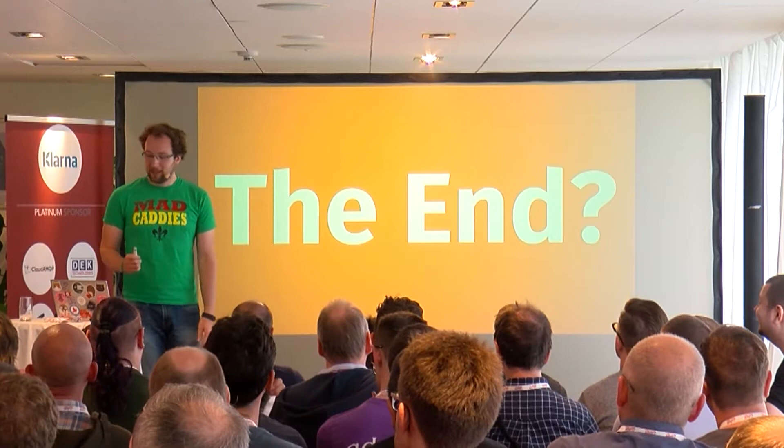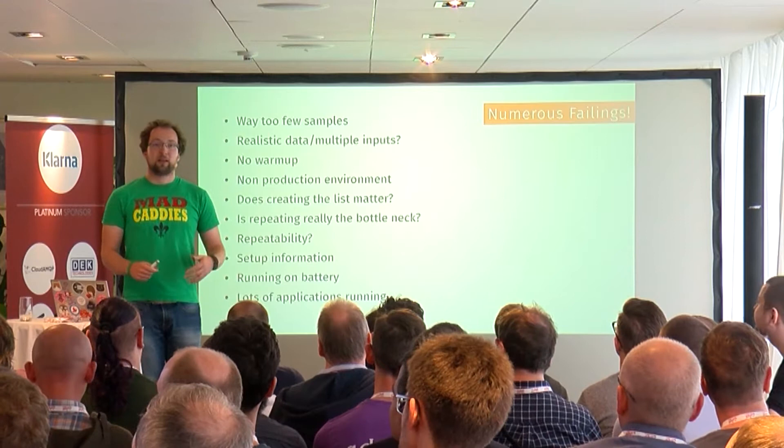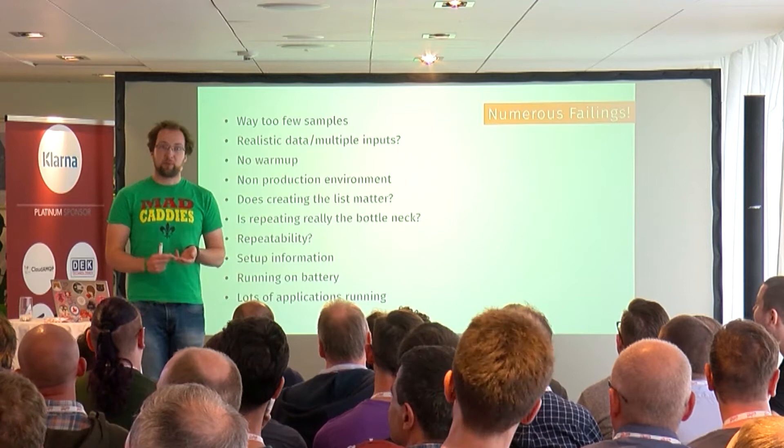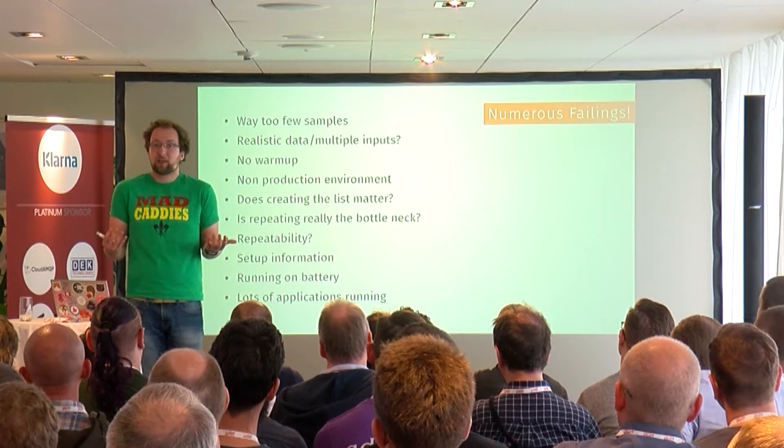We know definitely that all those functional people with recursion were wrong all the time. Clearly my enum each is much, much faster, and we can all just go home. It is not — because this is clearly an instance of having no idea what I'm doing. There are so many problems with what I've just showed you. You did it on your development machine while taking notes, Slack was running, you were on battery power, it was in the shell — not an actual compiled program, no production-like environment.